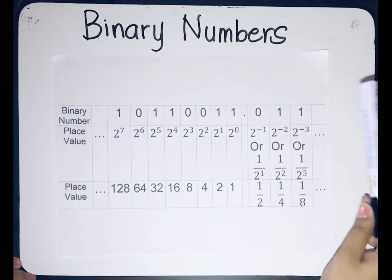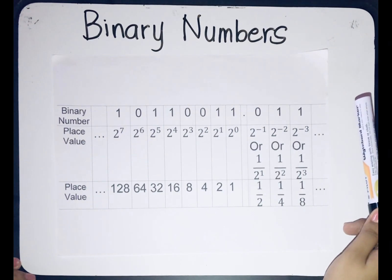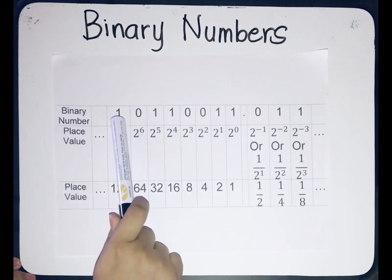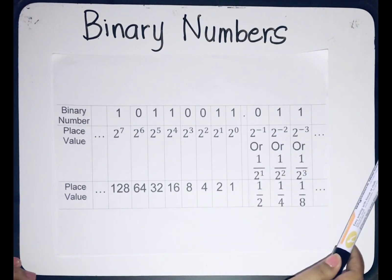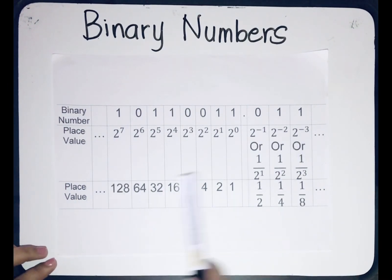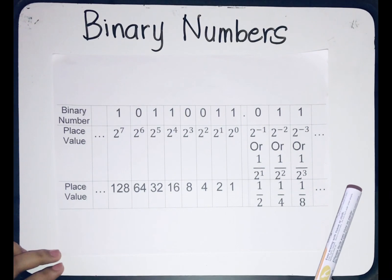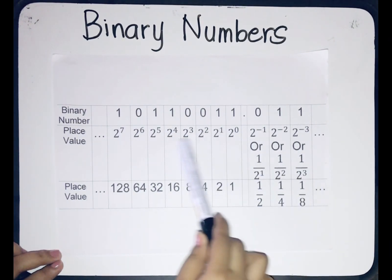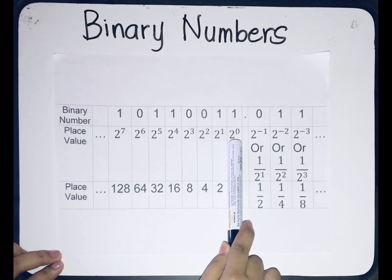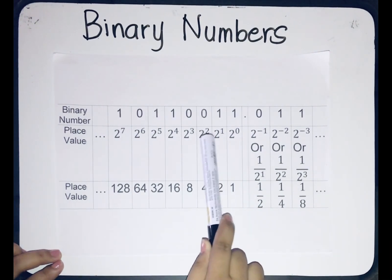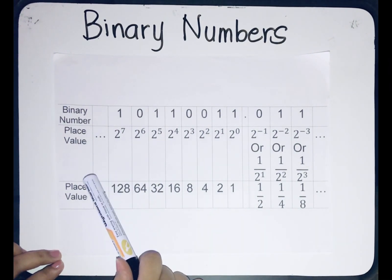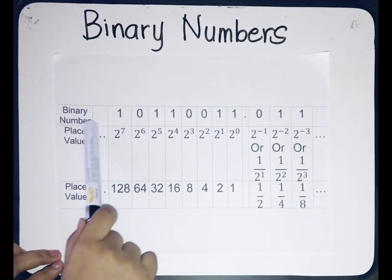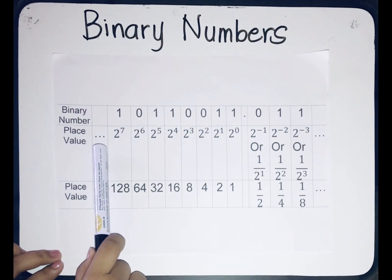In binary numbers, it is necessary to know the number base system. For example, we have the binary number 10110011.011. Using this example, let's identify the place values in binary. Since we are in the base 2 system, from the point to the left, the place value starts from 2 raised to 0, then 2 raised to 1, 2 raised to 2, and so on — the exponent increases by 1 as you go along. It is endless, so we use an ellipsis, and it can be extended depending on the given binary number.